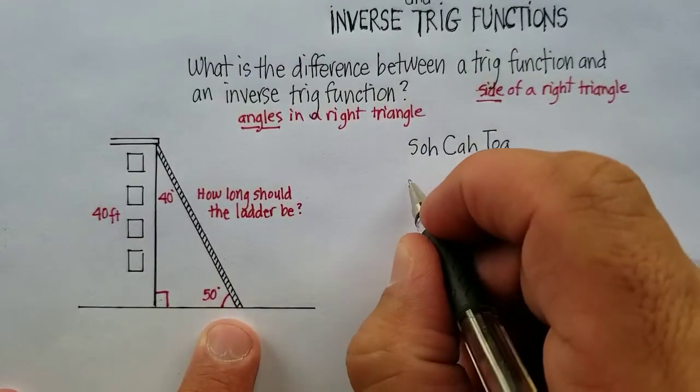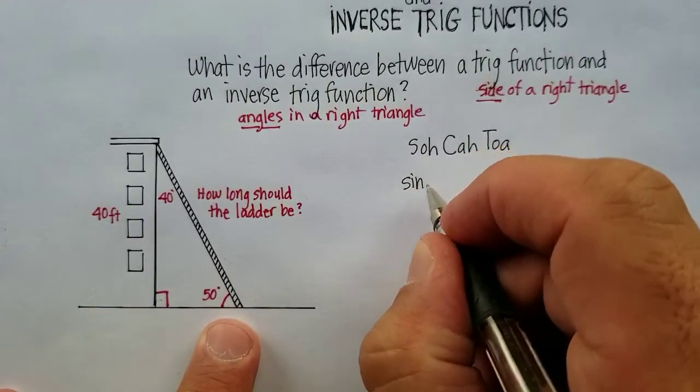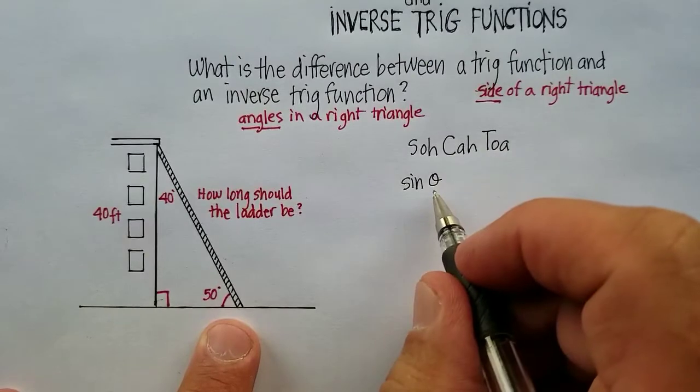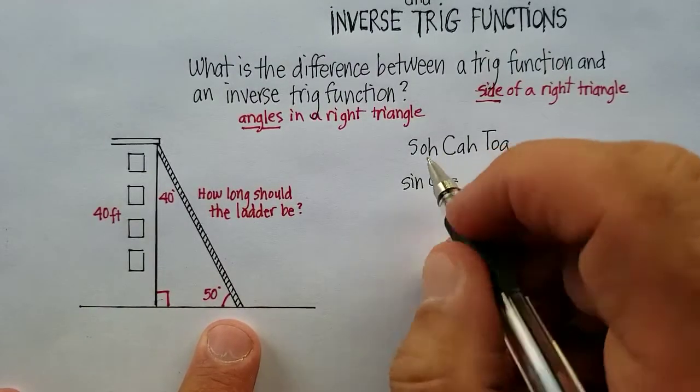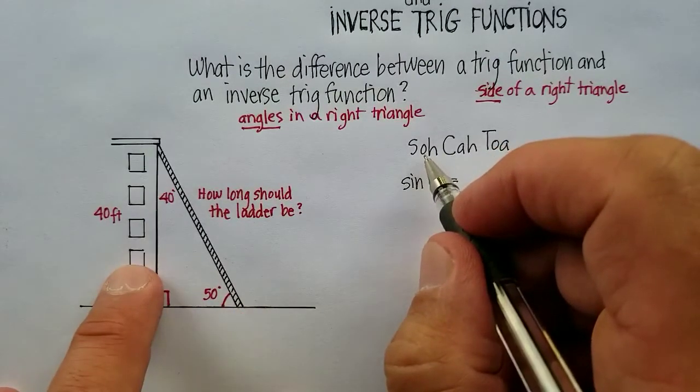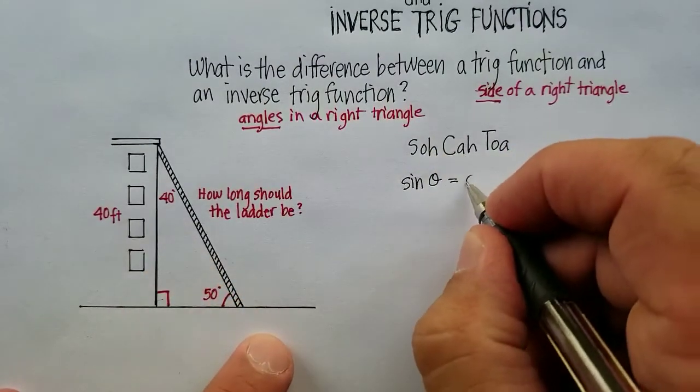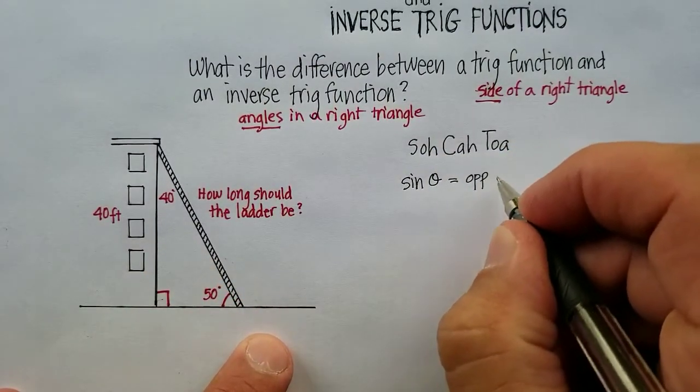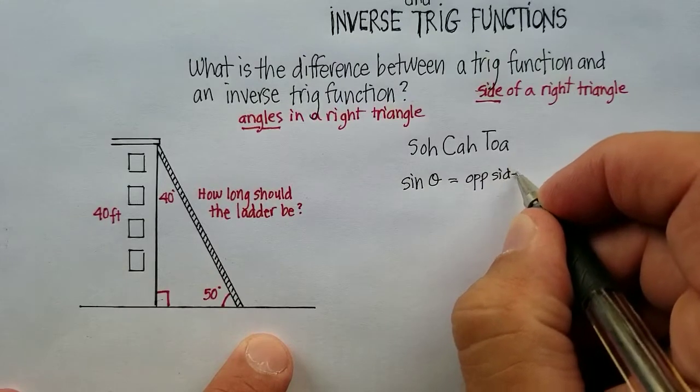This is the sine of an angle. The sine of any angle, and that's called theta, which means angle, is equal to the opposite side over the hypotenuse. So opposite side over the hypotenuse.